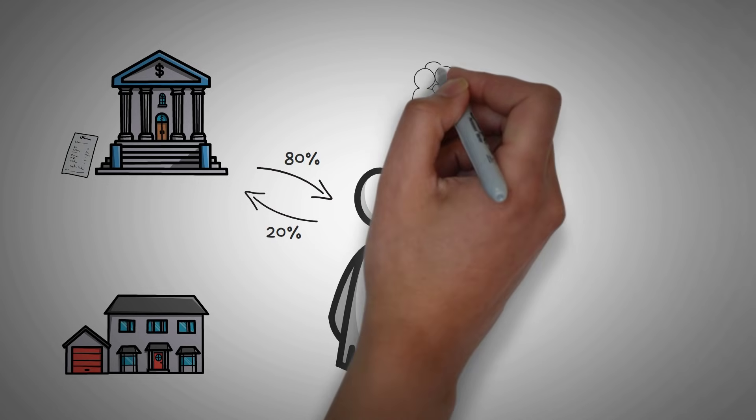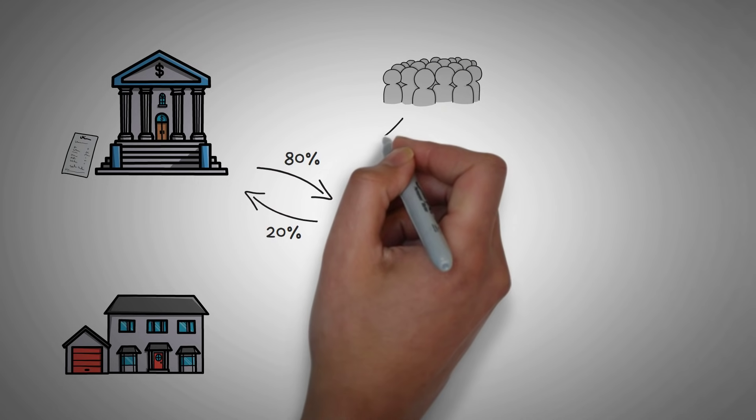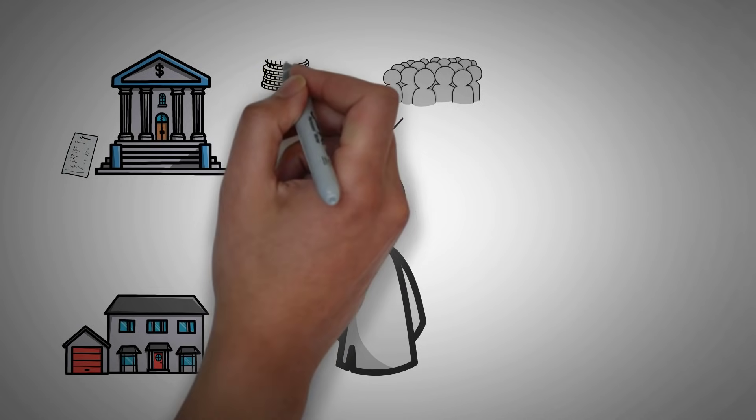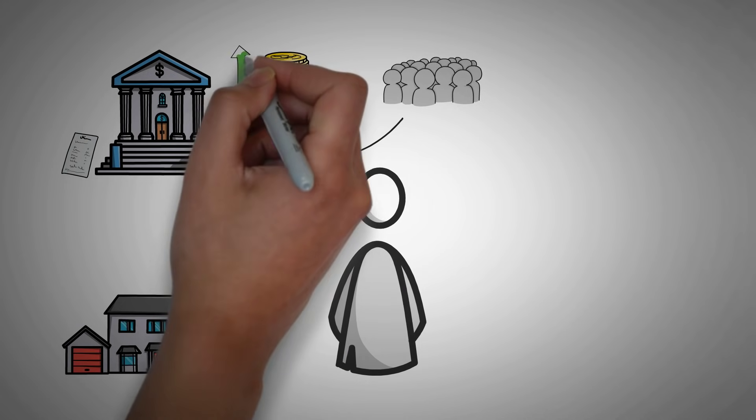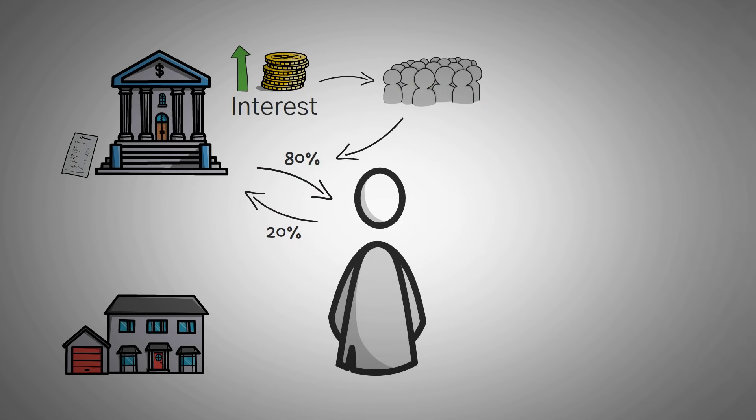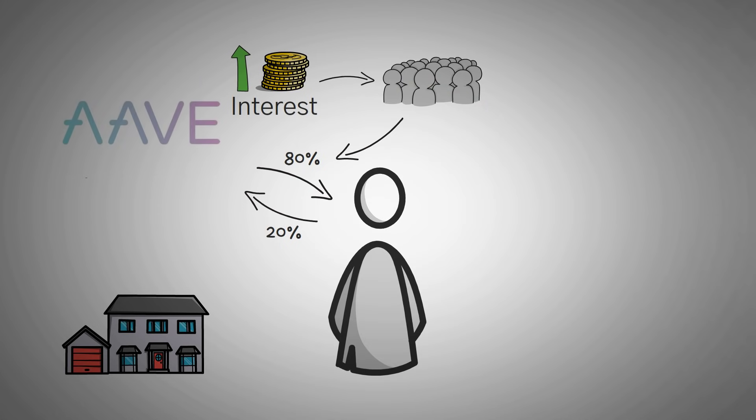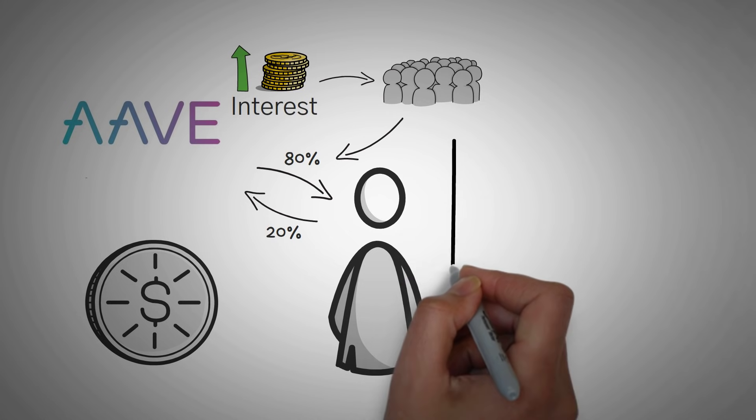Well, the money for the car and the money for that house come from a bank. They lend money knowing that you will pay high interest on it, and they give that interest to their lenders. Of course, the bank takes their cut. Well, Aave is the cryptocurrency version of that bank.